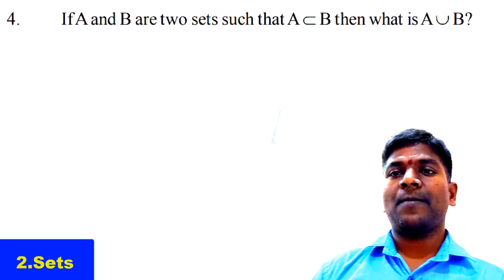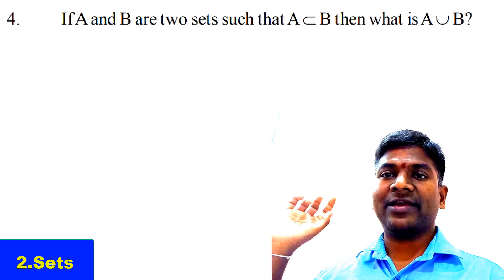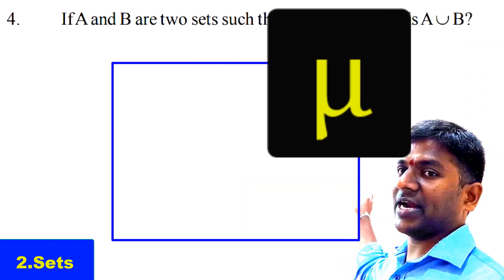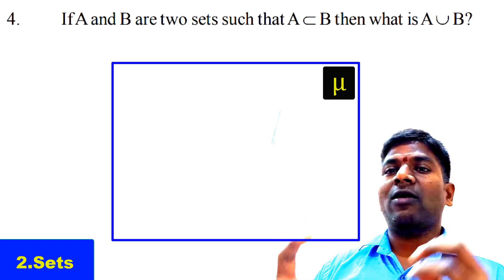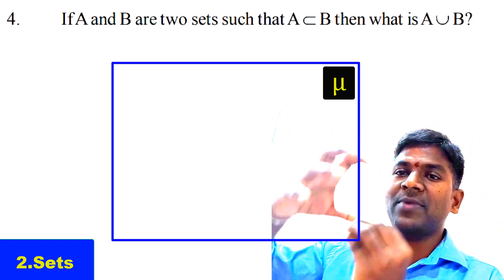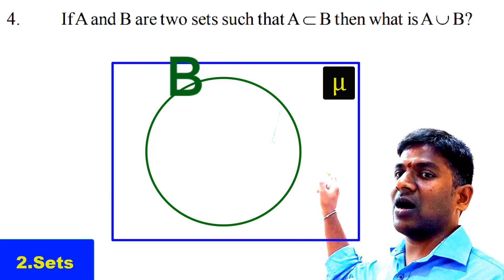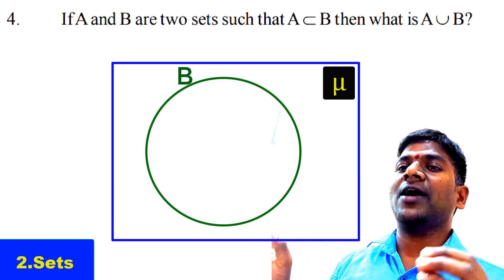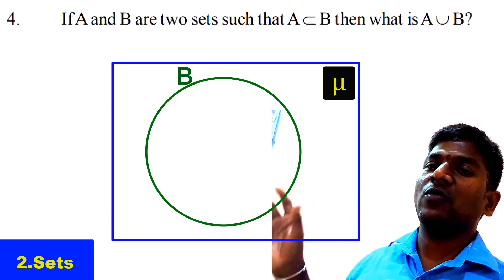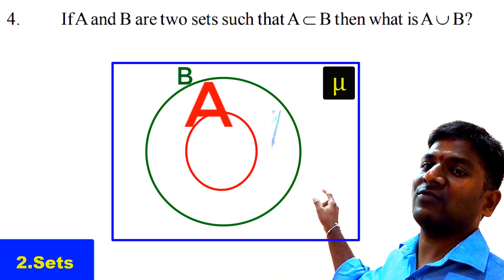We can understand the same result using a Venn diagram. If A ⊆ B, we draw a rectangle for the universal set. Since all elements of A are in B and B is the bigger set, we draw a larger circle for Set B and a smaller circle for Set A inside Set B — representing that A is a part of Set B.